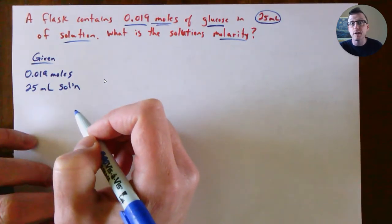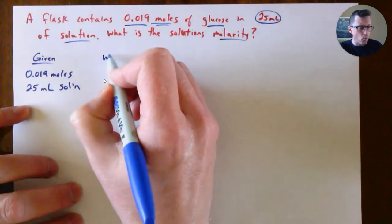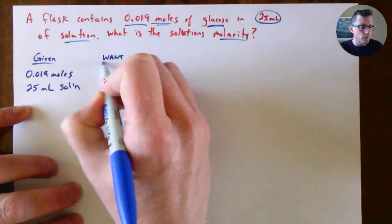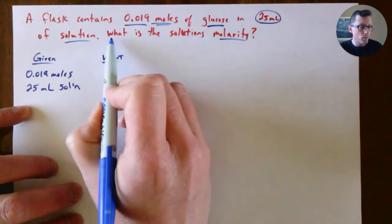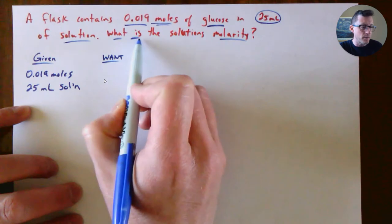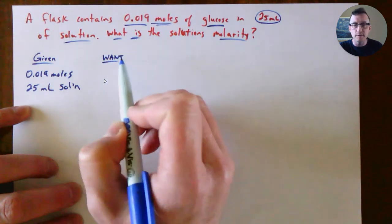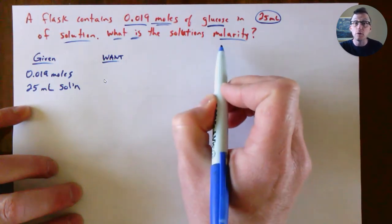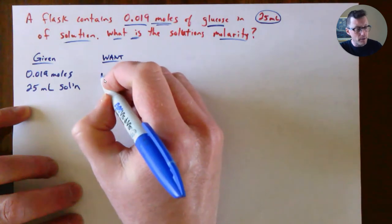What does the question want you to find? Look for those question words like 'what is' or 'calculate' or 'find'. We want molarity, and molarity is represented by capital M.